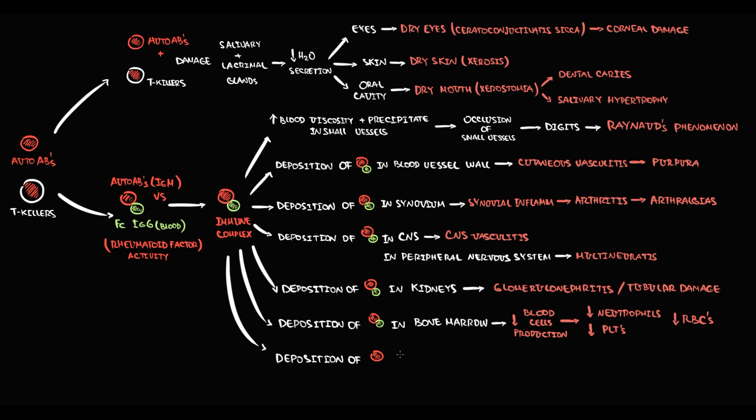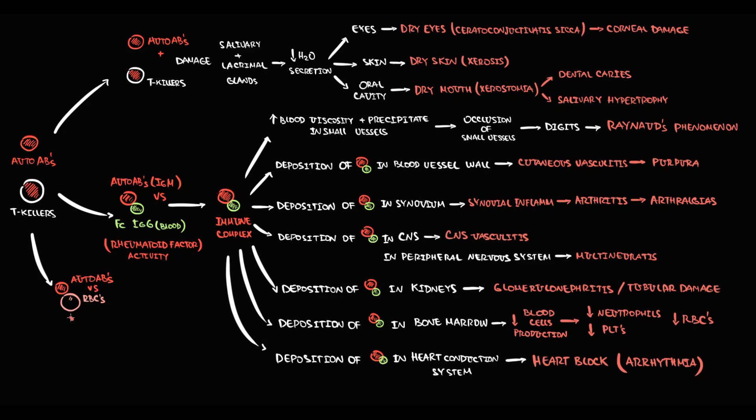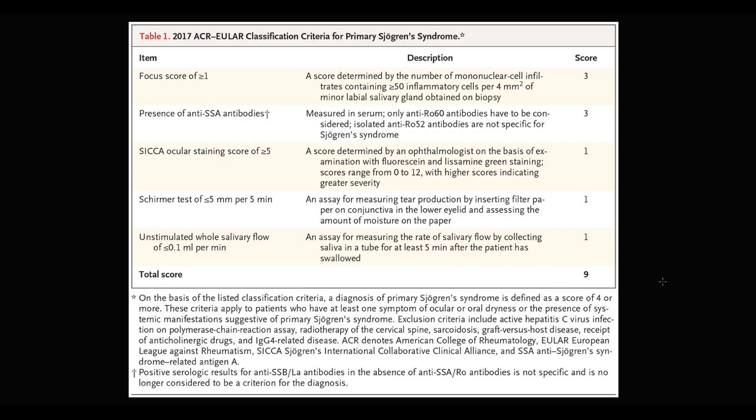Deposition of immune complexes in the heart conduction system can cause heart block, which manifests as arrhythmia. Also, antibodies can bind to red blood cells, and in this state they circulate through the bloodstream until they reach the spleen, where macrophages destroy them. As a result, hemolytic anemia develops, which can cause decreasing red blood cells and increasing bilirubin.